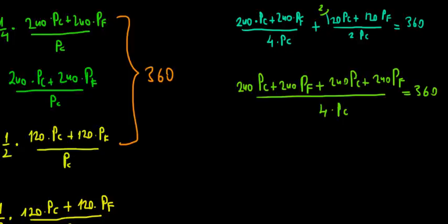Now let's do a cross product and see what we get. If we do a cross product over here, 240 price of clothing plus another 240 price of clothing is 480 price of clothing plus 240 price of food plus 240 price of food, that's 480 price of food, equals to 360 times 4, which equals 1440 multiplied with the price of clothing.